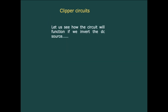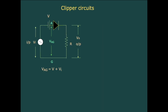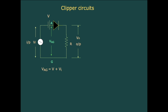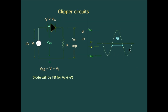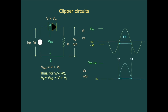Now let us see how the circuit functions if we invert the DC source. With the inverted DC source, VAG equals V plus Vi. VAG equals zero when Vi equals minus V and is greater than zero for all Vi greater than minus V. Looking at the input sine wave with its negative level at minus V, for all values of Vi greater than minus V the diode is forward biased.